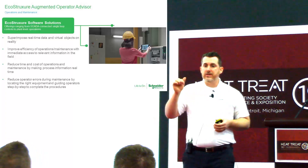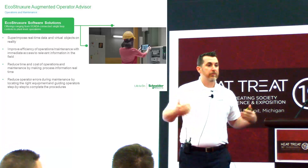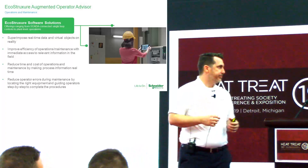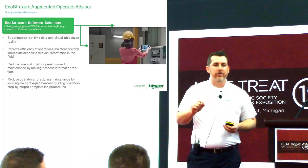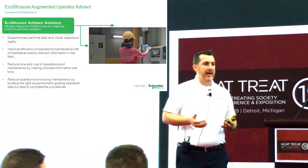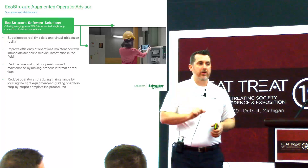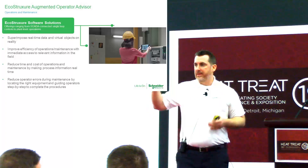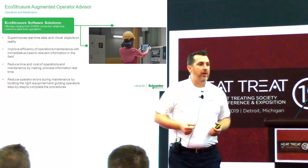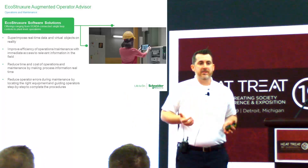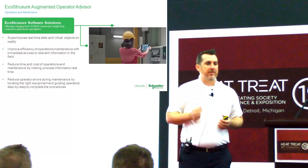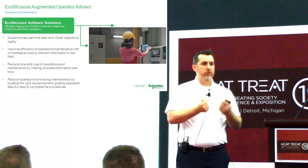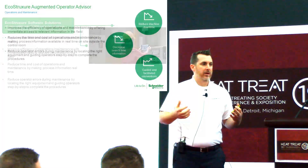This improves efficiency of operations and maintenance by reducing the time it takes for staff to find information relevant to the task they're performing. It also reduces operator errors because a well-designed augmented reality system will step-by-step guide an operator through the process they're trying to perform — whether that's a maintenance process, changing the oil in a pump, or whatever that maintenance practice may be. A well-designed augmented reality system can provide step-by-step guidance on precisely how to do that, so you can hand a brand new maintenance person their virtual device and send them into the field to perform a task.